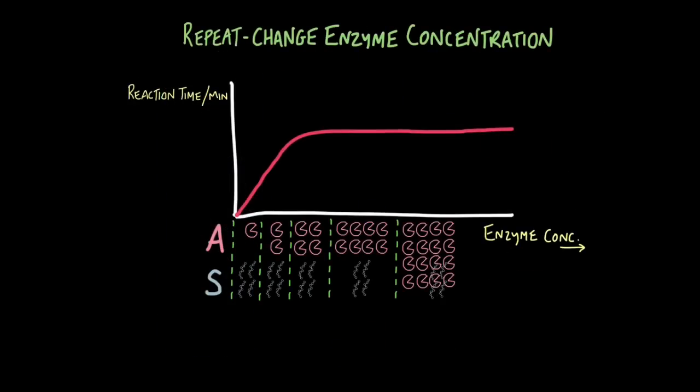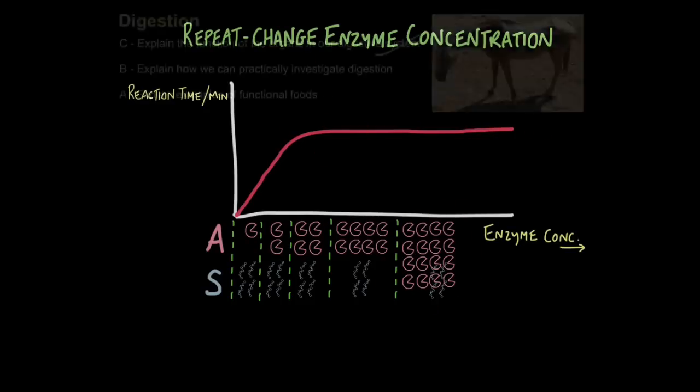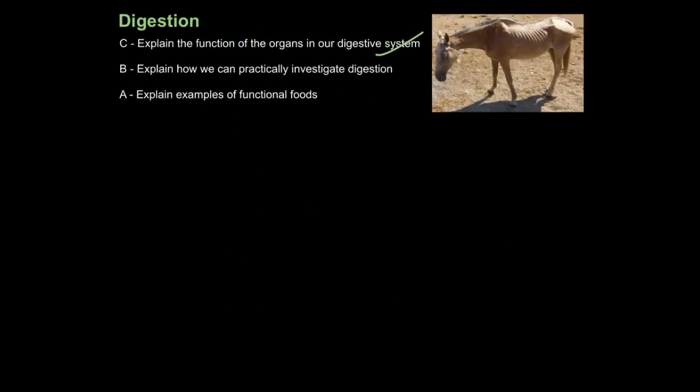You can then repeat this experiment and change the enzyme concentration and then work out a relationship. Now if you've seen the enzyme tutorial on limiting factors, you'll understand this graph immediately. Basically, the higher the enzyme concentration, the more quickly starch gets broken down into sugar. But this only happens up to a point. If you remember, enzymes work by bonding their active site with the substrate so they can break it down. Now if there's only a limited amount of substrate, then all those substrates will be occupying an active site. And you can keep on adding more enzymes, but it won't do any good because there's no substrate to be broken down. They're all being used. So by this point, you can assume that substrate concentration is the limiting factor. We need to increase the substrate to increase the rate of reaction. And that is how you explain how we can practically investigate digestion.